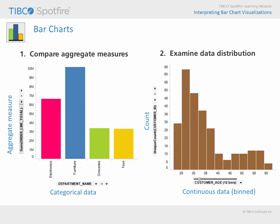For example, here our customers' ages have been grouped or binned into 12 ranges, and the count of customers in each age range is reflected in the height of each bar. So, where is our peak demographic age range? We have the largest number of customers in the 25 to 28 year old age bin.